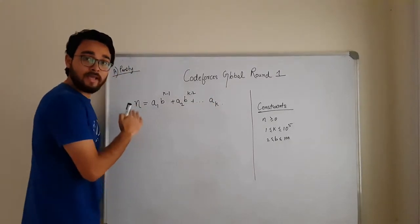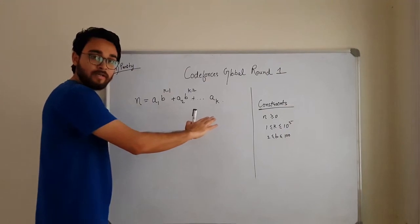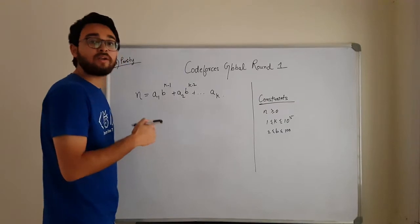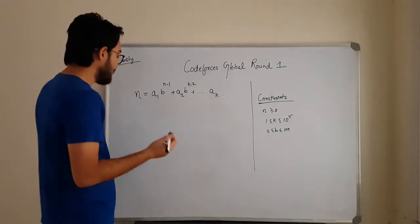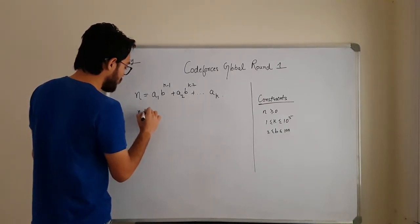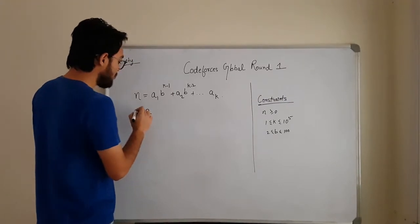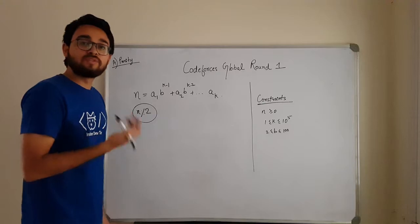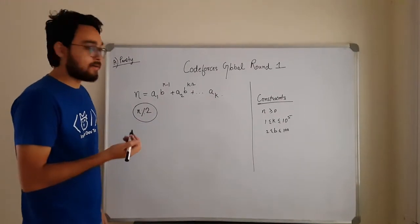You are given a number n of this format and what you need to tell is whether this number is an even number or an odd number. So how to check that? You simply do n modulo 2. So this will be your answer. If n modulo 2 is equal to 0 that means it is an even number otherwise it is an odd number.